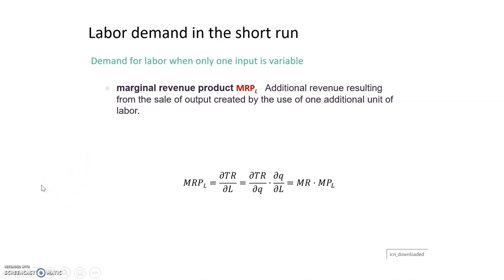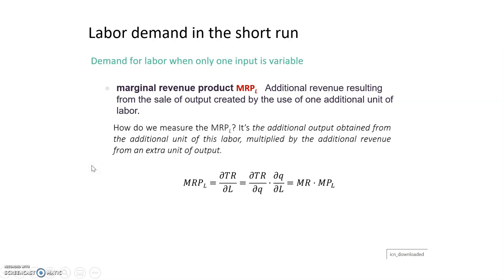So this is the additional revenue after selling the output that is created by one additional unit of labor — one more worker. If I hire one more worker, how much marginal revenue can I add to my firm by hiring this additional worker? How can I compute or measure the marginal revenue product of labor?